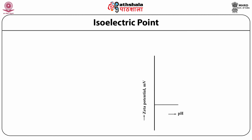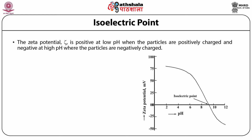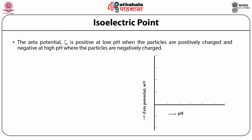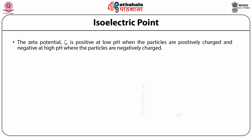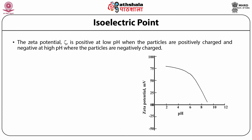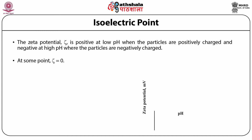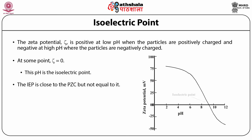The factor F_H depends on particle size: it is 1.5 for particles smaller than the thickness of the electrical double layer and 1 for particles larger than 100 times the thickness of the double layer. The zeta potential is positive at low pH where the particles are positively charged, goes through 0 as the pH is increased, and becomes negative after that, as shown schematically for alumina particles. The pH at which the zeta potential is 0 is called the isoelectric point, which is very close to PZC.